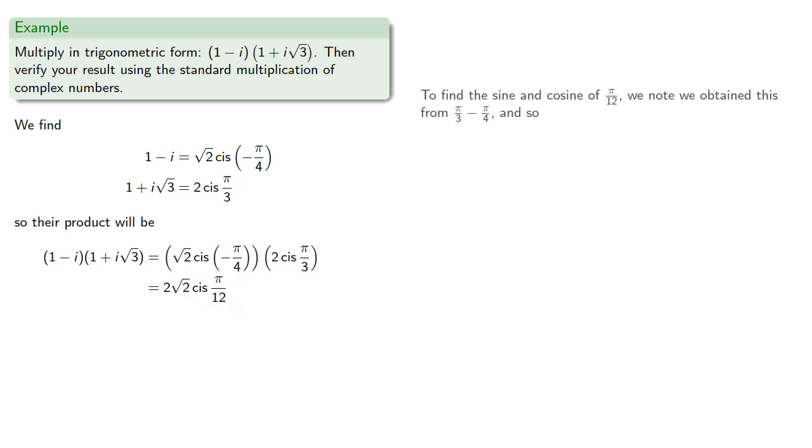Now to find these values easily, we note that they were obtained by adding negative π/4 and π/3. In other words, they're π/3 minus π/4. And we can use our angle sum and difference identities.